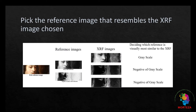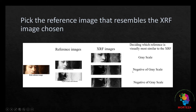The second stage is that now we have two different reference images: one is the grayscale reference and the other is the negative of the grayscale reference. The experimenter should first choose the reference and the XRF image that are most similar to each other visually. It does not matter which XRF image is chosen for this process — what matters is to choose the reference and the XRF that are visually most similar. For example, this XRF is more similar to the grayscale reference, but these two are more similar to the negative of grayscale reference.